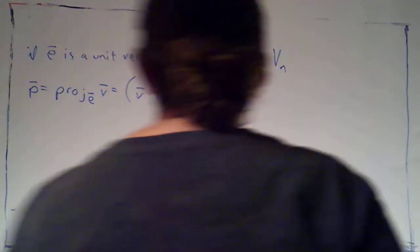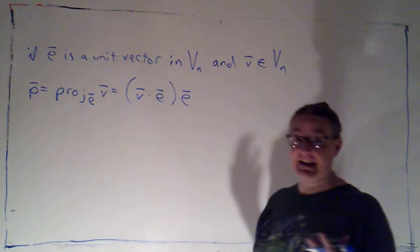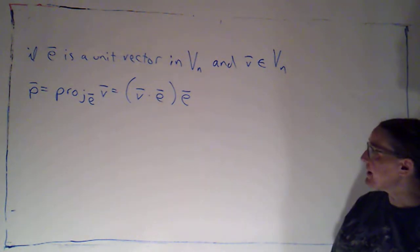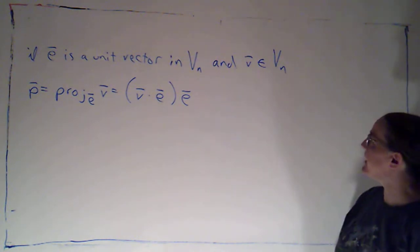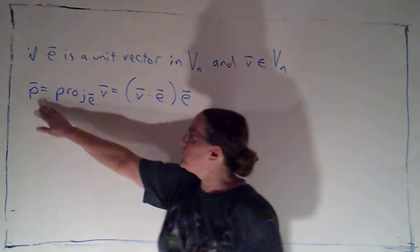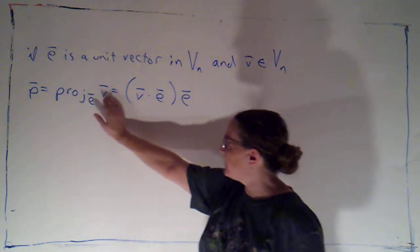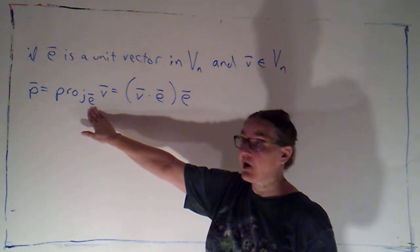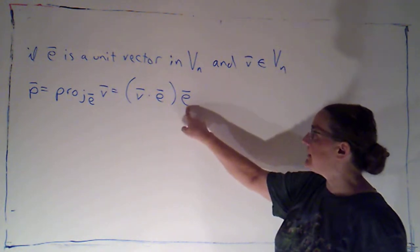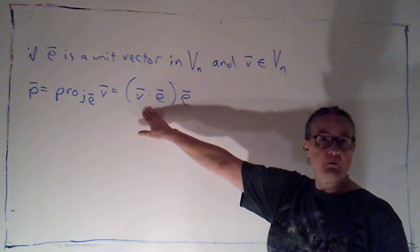In the last video, we proved in a specific case that if we had a unit vector and then some other vector in the same space, we could create the projection of that vector V onto E, our unit vector, by simply scaling E by the dot product of V with E.